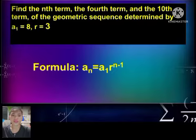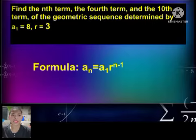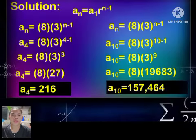To find the specific term of a geometric sequence, use the formula for finding the nth term. Step 1: The nth term of a geometric sequence is given by a sub n equals a sub 1 multiplied by r raised to n minus 1.